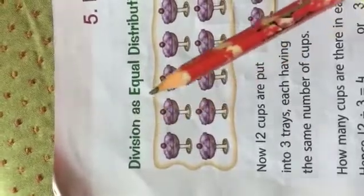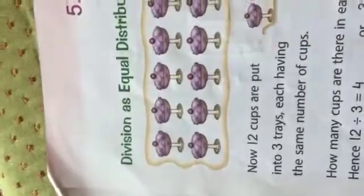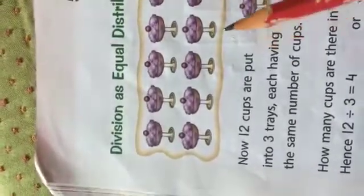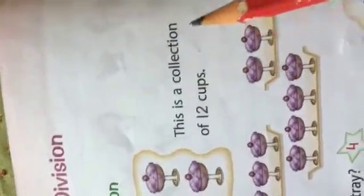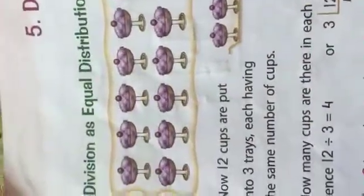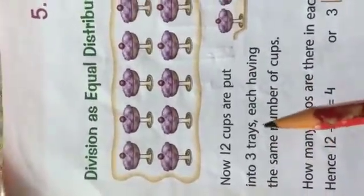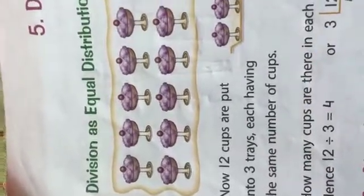Division as equal distribution. You can see here you have been given 12 cups — this is a collection of 12 cups. Now, these 12 cups are put into three trays, each having the same number of cups.